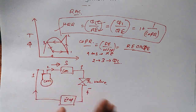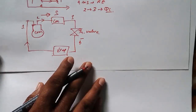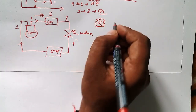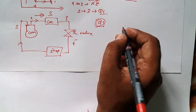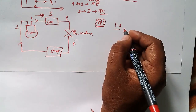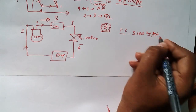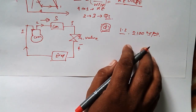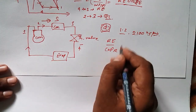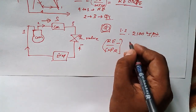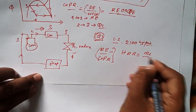Let me share an example that has appeared in examinations. The value of the Heat Rejection Ratio is 1.2, and the heat rejected across the condenser is 2100 kJ/min. We need to find the refrigerant effect (RE) in kJ/min and the COP of the refrigerator. Using HRR = Qc / RE, with HRR = 1.2.